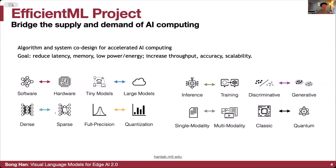We focus on both dense and sparse models, how to accelerate sparsity with system and hardware support, full precision versus quantized models — quantized models for both inference and training — from discriminative models to recently generative models with diffusion techniques, from single modality to multi-modality, which is the focus of today's talk: multi-modal visual language models. We also have a satellite project on quantum machine learning.